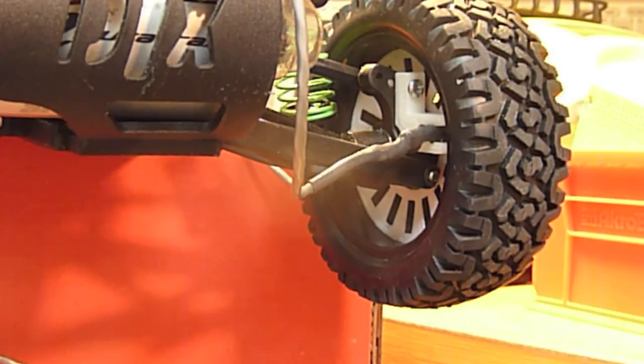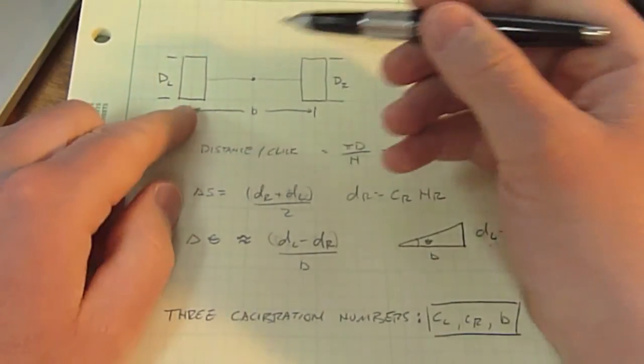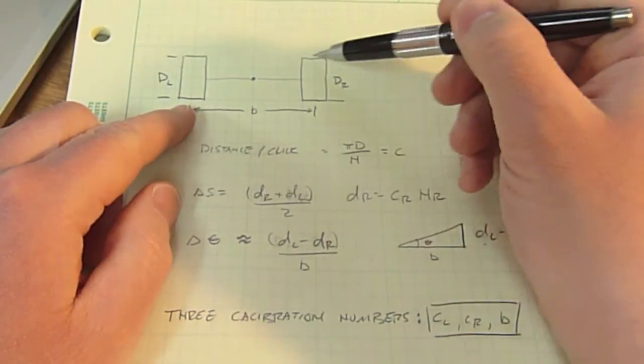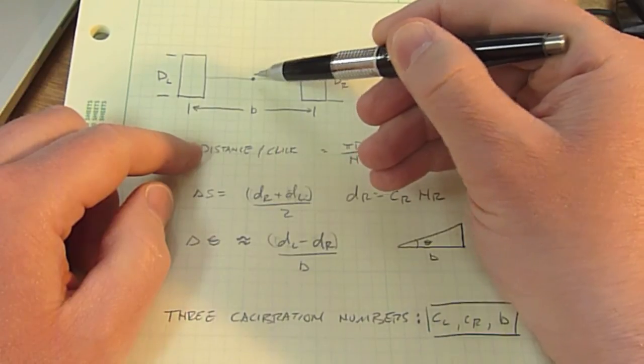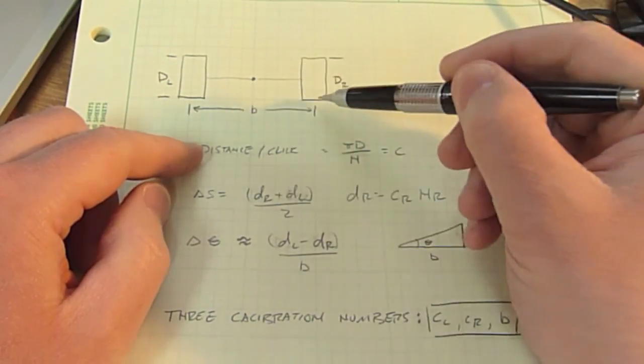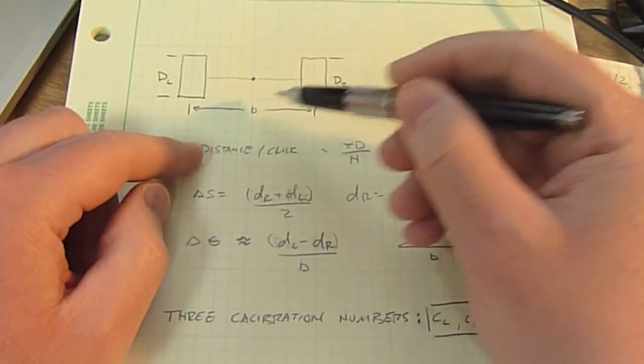Let me go through the math of the odometry and then show you how I actually get the calibration factors. The math for odometry is pretty simple. This is a schematic diagram of the left wheel and the right wheel, basically halfway between the two wheels. The distance between the contact point of the left wheel and the right wheel we'll call B for baseline.